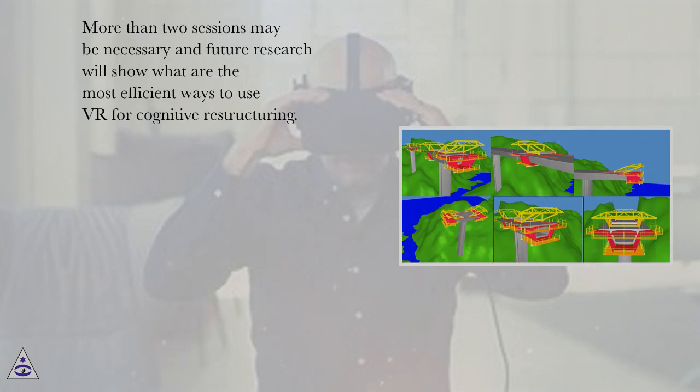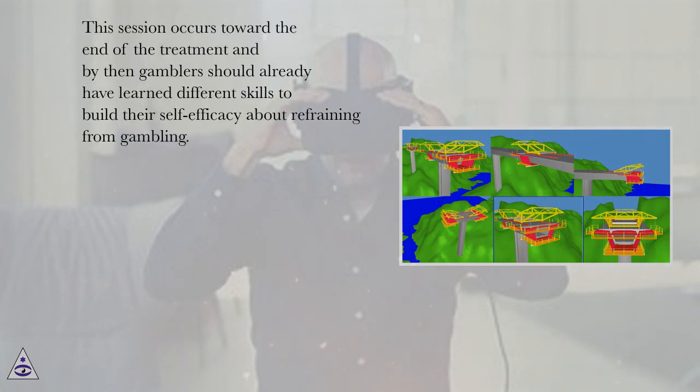More than two sessions may be necessary and future research will show what are the most efficient ways to use VR for cognitive restructuring. This session occurs toward the end of the treatment and by then gamblers should already have learned different skills to build their self-efficacy about refraining from gambling.